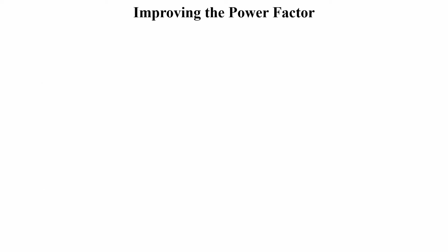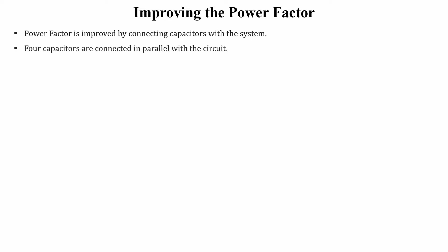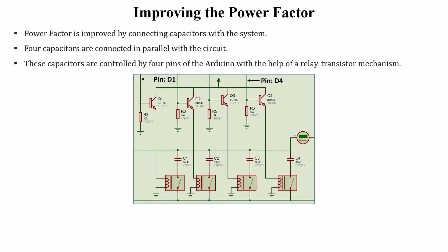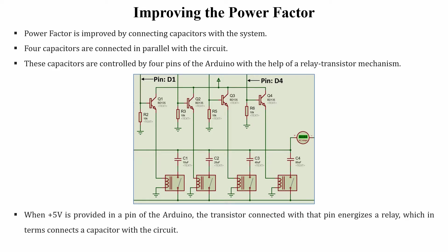Using this delta t value, theta is calculated and then the power factor is evaluated. Now, how to improve the power factor? In most cases the power factor is below unity due to inductive loads, so it can be improved by introducing capacitances in the system. We use a capacitor bank of four capacitors connected in parallel with the circuit. These capacitors can be connected or disconnected using a relay-transistor mechanism controlled by pins D1 to D4 of the Arduino. When a positive 5V is provided on an Arduino pin, the transistor energizes the relay, which connects the corresponding capacitor to the circuit.